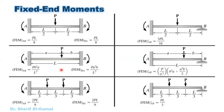Different loading types are covered in the table: concentrated load at the middle, concentrated load off-center, two concentrated loads, uniform load, triangular load, and even settlement of support. For example, a concentrated load P on a fixed-fixed span of length L at the midpoint results in fixed end moments of PL/8 at each end — counterclockwise (negative) on the left side (MAB) and clockwise (positive) on the right side (MBA).